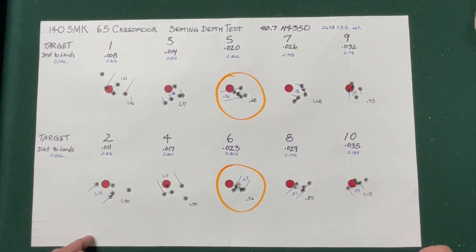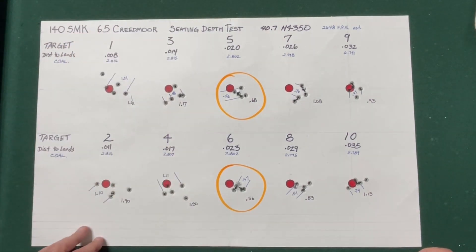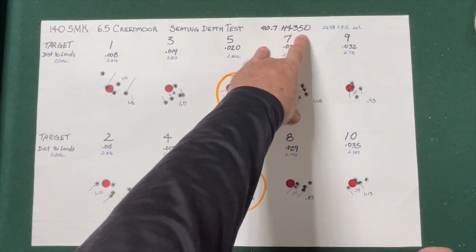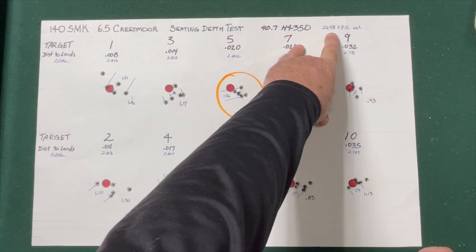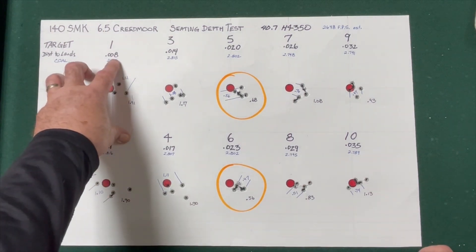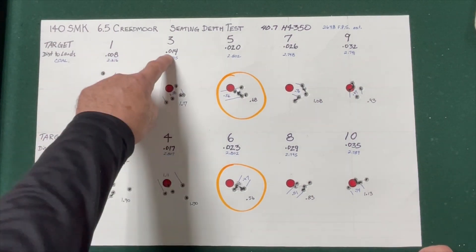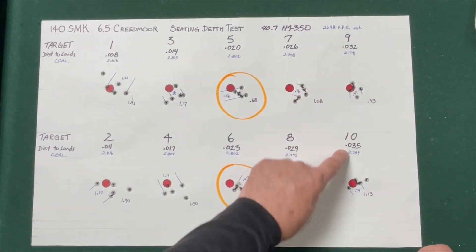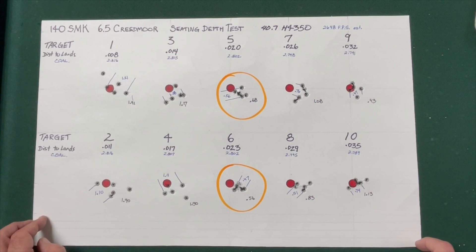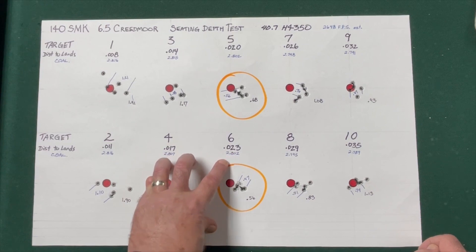Here are the results of my seating depth test. Shooting 140 grain Sierra Match Kings with a 6.5 Creedmoor at 100 yards. We were using 40.7 grains of H4350 powder, which produced an estimated velocity of just under 2,650 feet per second. So we had 10 five-shot groups loaded with steps starting at 8 one-thousandths off of the lands and then going in 3 one-thousandths increments to 11 thousandths, 14, 17, 20, 23, 26, 29, 32, and 35 thousandths off of the lands. The best groups of the day were at 20 and 23 thousandths off of the lands.